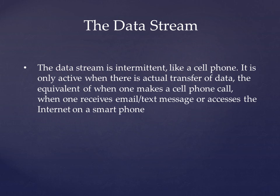On the other hand, the data stream is intermittent, like a cell phone. It's only active when there's an actual transfer of data — the equivalent of when one makes a cell phone call, when one receives an email or text message, or accesses the internet on a smartphone.